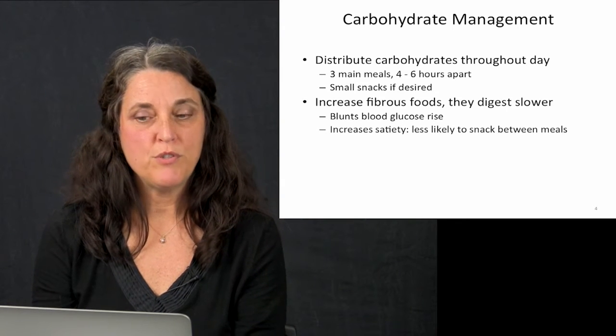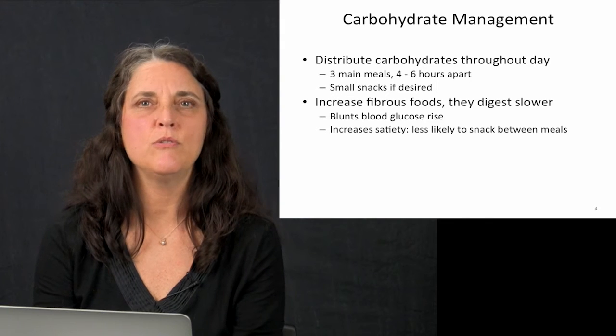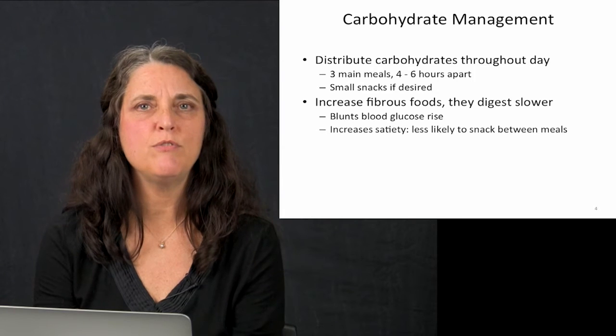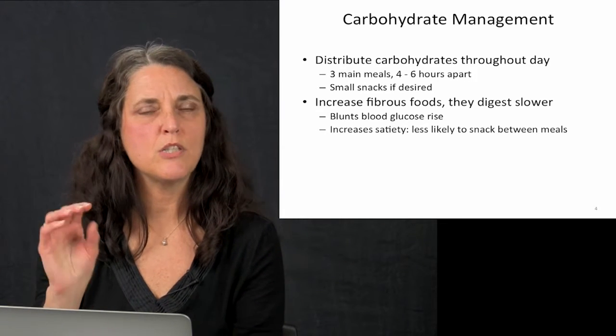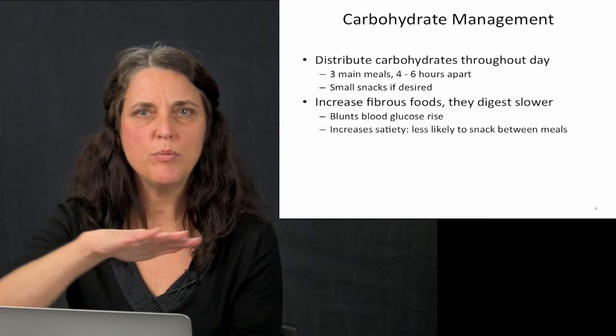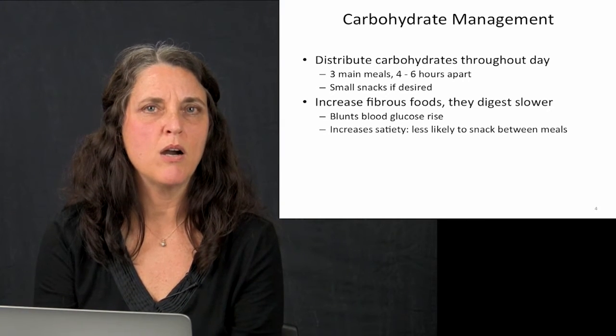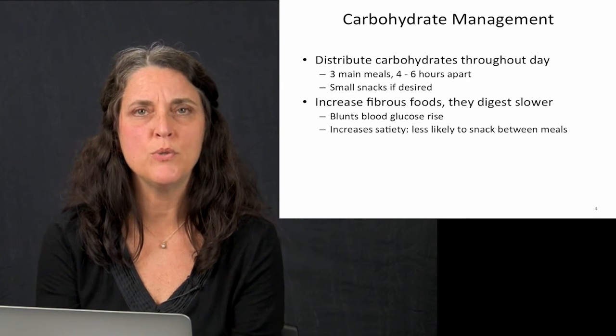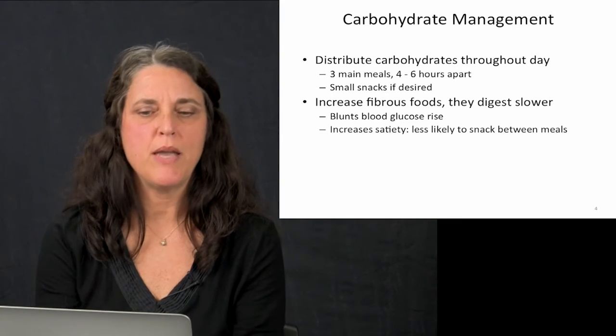Increasing fibrous foods using whole grains like brown rice, quinoa, steel-cut oats, legumes and beans, blunts the blood glucose rise because the food is digesting slower, it's entering the bloodstream slowly over time so the blood glucose doesn't rise as steeply. And for people who are diet controlled, they're not taking insulin necessarily, like a type 2, that's going to make a big difference in keeping their blood sugars managed.